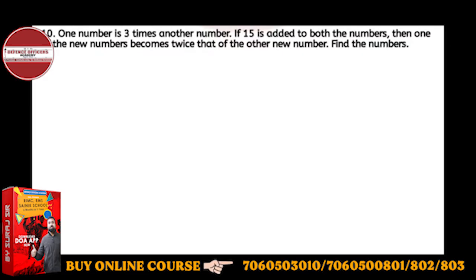One number is three times another number. If 15 is added to both the numbers, then one new number becomes twice that of the other new number. Find the numbers. This one is very easy.